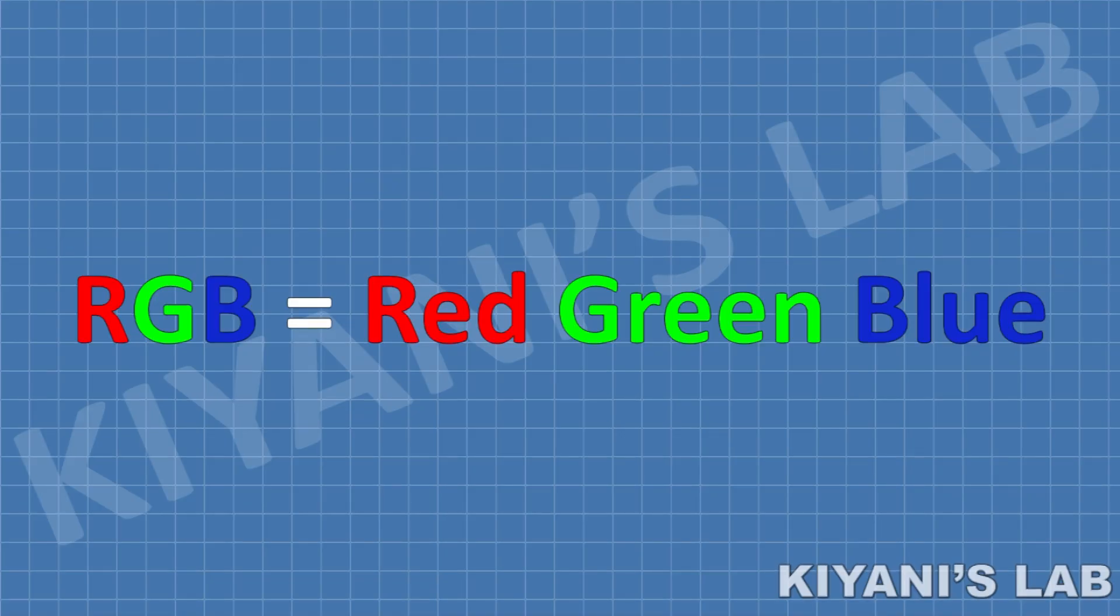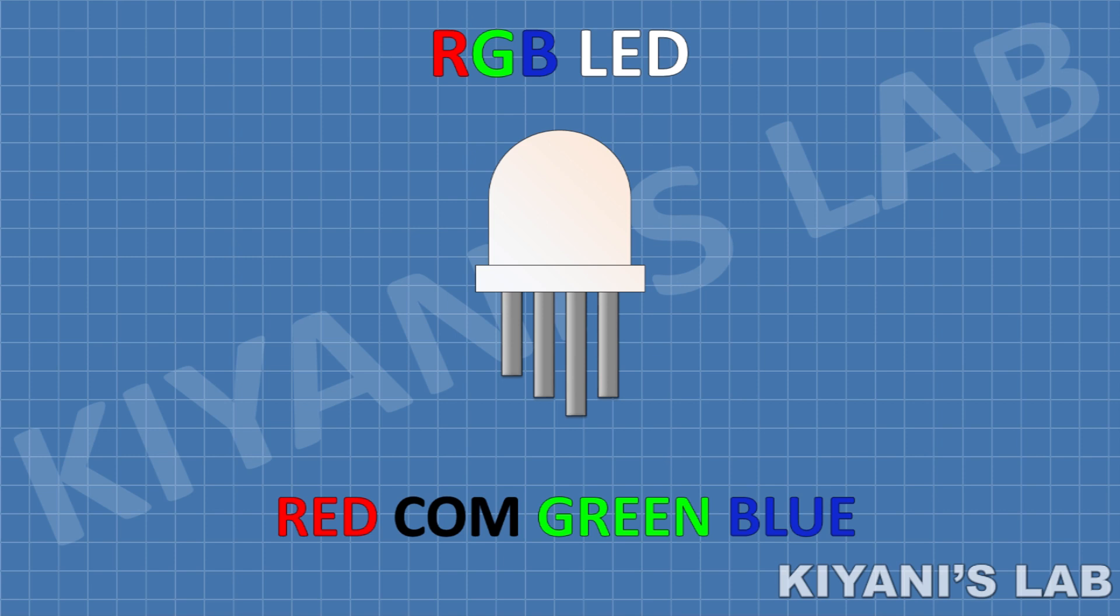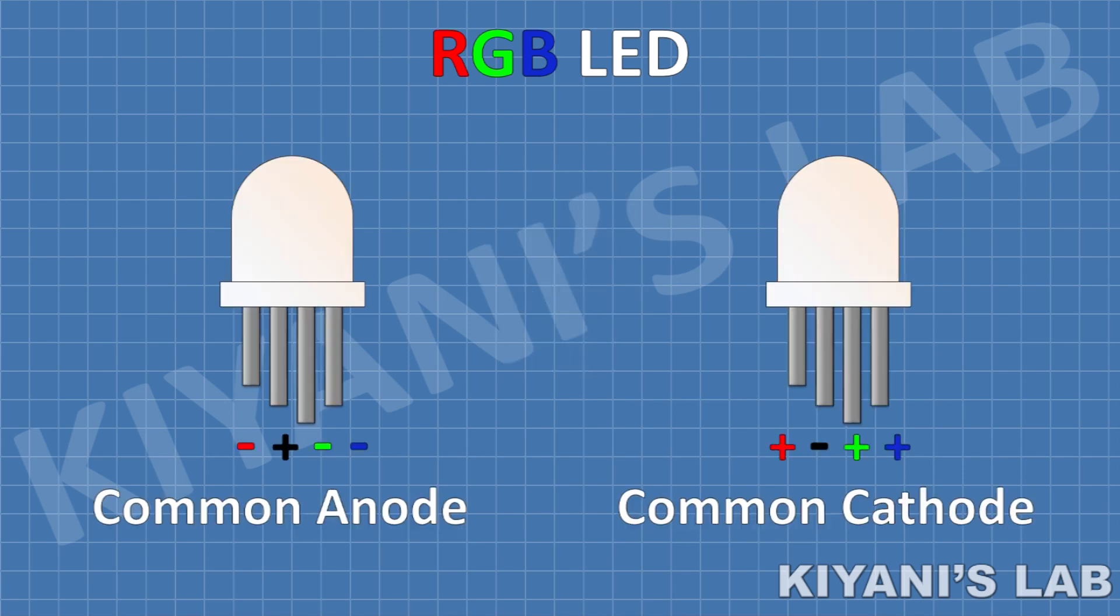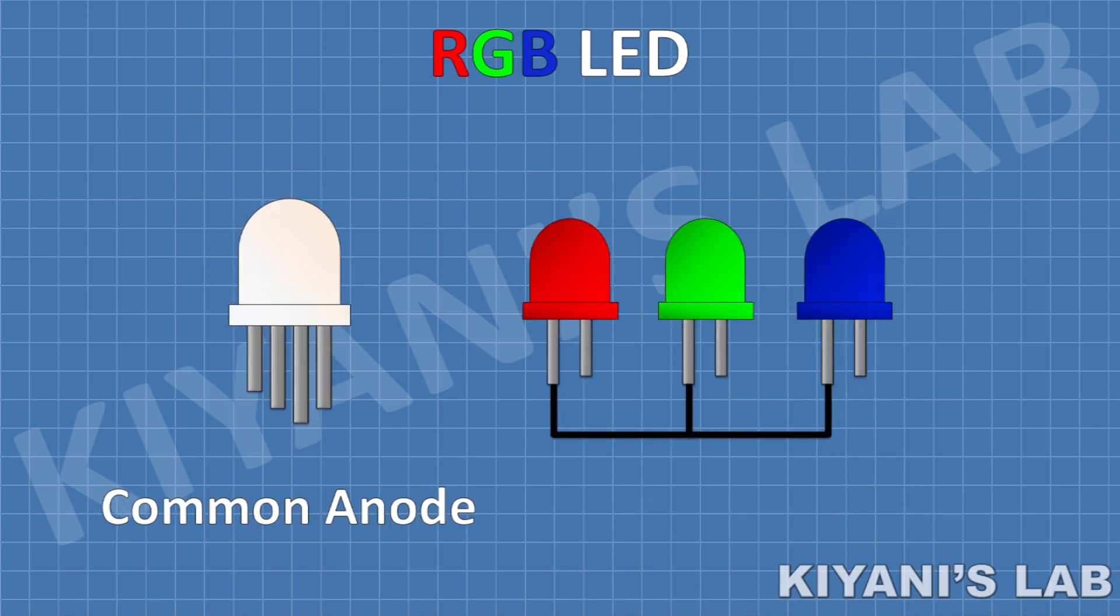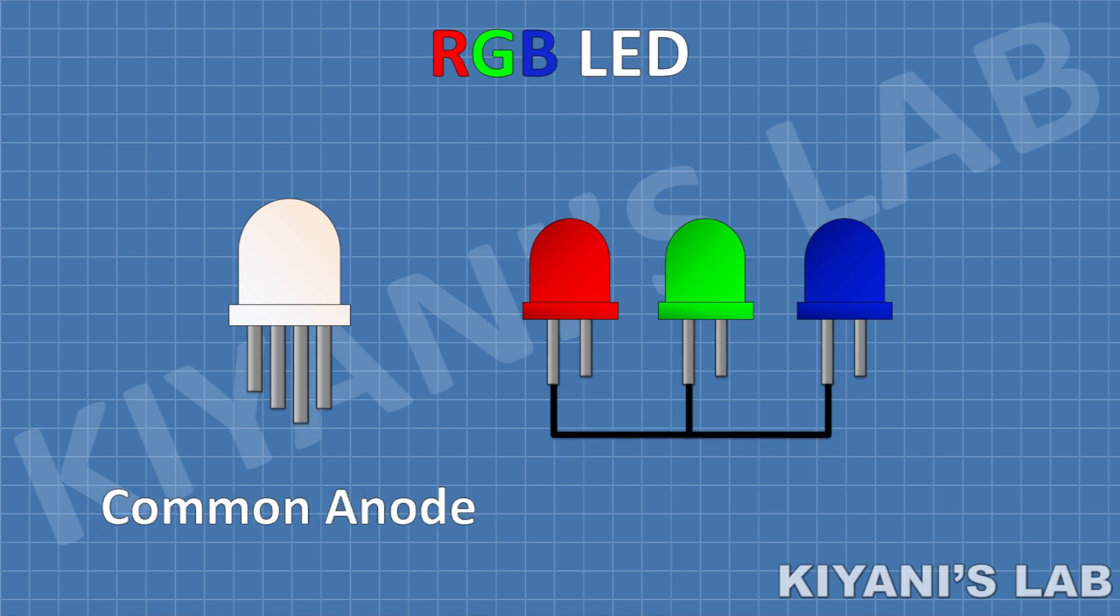RGB means red, green, and blue. So RGB LED is the LED made with three different color LEDs combined in a single package. There are two types of RGB LEDs: common anode LEDs and common cathode LEDs. In common anode, the positive pin of red, green, and blue LEDs are combined together and this is the common pin for all three LEDs. In common cathode, the negative pin of red, green, and blue LED are connected together.